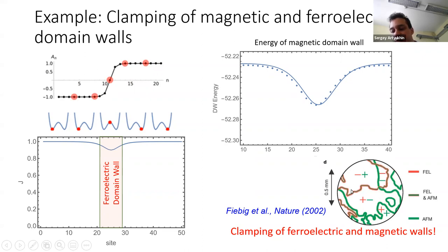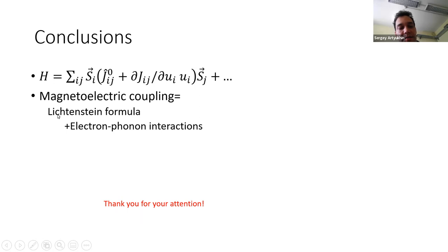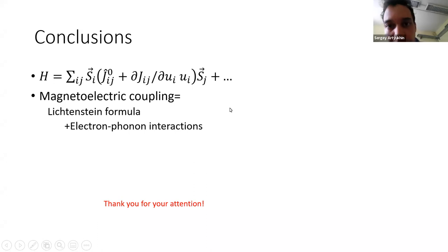In conclusion, exchange striction can be calculated using electron-phonon coupling — it is essentially the Lichtenstein formula plus electron-phonon interactions. One remaining open problem is the correction to U due to ionic shifts in non-centrosymmetric environments. Thank you for your attention.